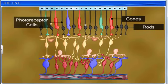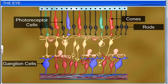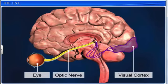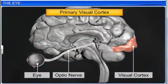This results in the generation of action potential in the ganglion cells, through the bipolar cells. The action potential, or impulses, are transmitted to the visual area of the cerebrum by the optic nerve. These nerve impulses are analyzed in the visual area and help to recognize the image formed.